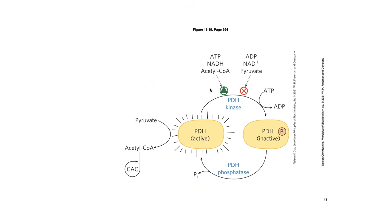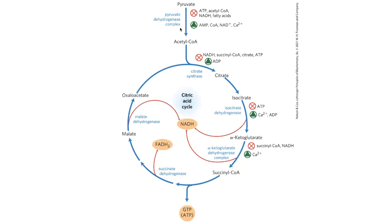Pyruvate dehydrogenase is actually regulated by phosphorylation — when phosphorylated, it's inactive. We inactivate it by activating PDH kinase. If we have plenty of energy — plenty of NADH, plenty of acetyl-CoA — we activate this kinase, which phosphorylates and inactivates pyruvate dehydrogenase. This gives us less acetyl-CoA entering the pathway. Once in the cycle, citrate synthase is another regulated step. Similarly, isocitrate dehydrogenase and alpha-ketoglutarate dehydrogenase — the two CO2-losing steps — are both regulated based on the availability of downstream components.